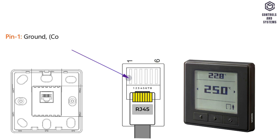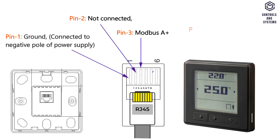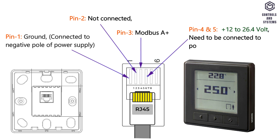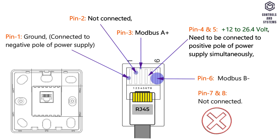Pin 1 is ground, connected to the negative pole of the power supply. Pin 2 is not connected. Pin 3 is Modbus A+. Pin 4 and 5 is +12 to 26.4 volt, and pin 4 and 5 need to be connected to the positive pole of the power supply simultaneously. Pin 6 is Modbus B-, pin 7 and 8 are not connected.